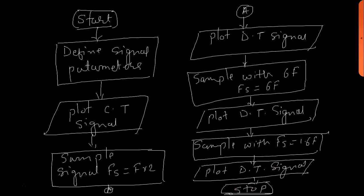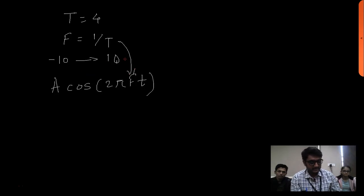This is the general flow of our practical. We will consider the time period T of our signal as 4, so the frequency F = 1/T. The continuous-time signal is continuous in time and we analyze it over a particular time frame, say t from minus 10 to 10. The standard form of our signal is x = cos(2·π·f·t).